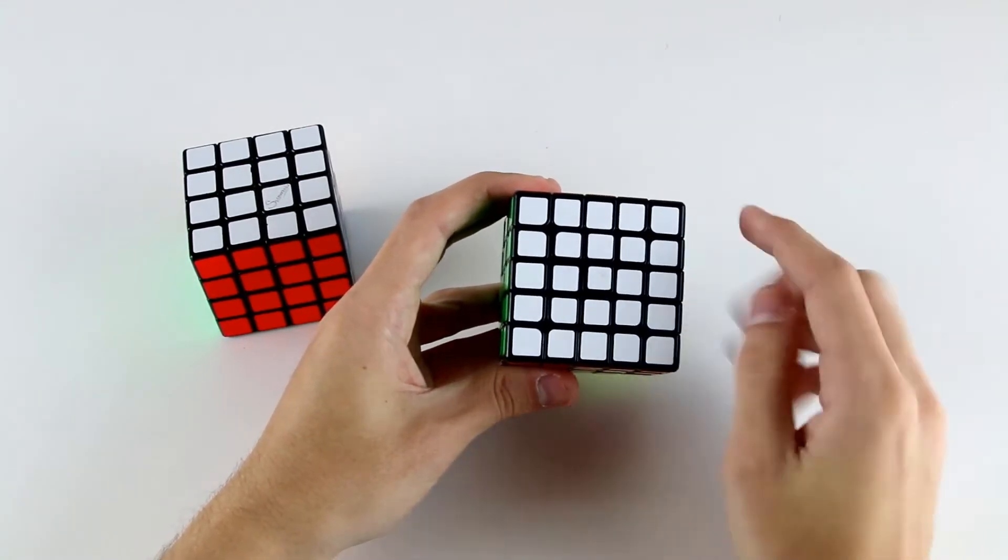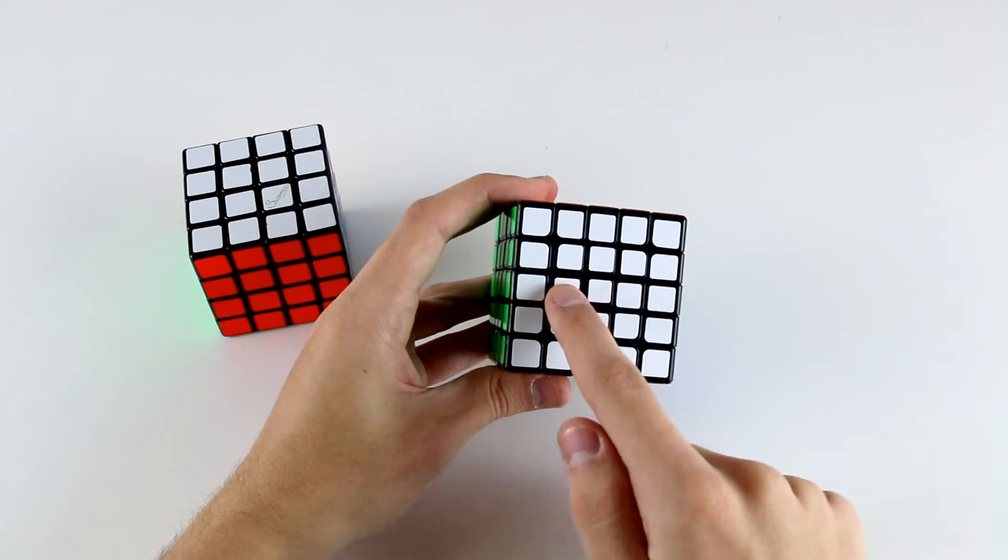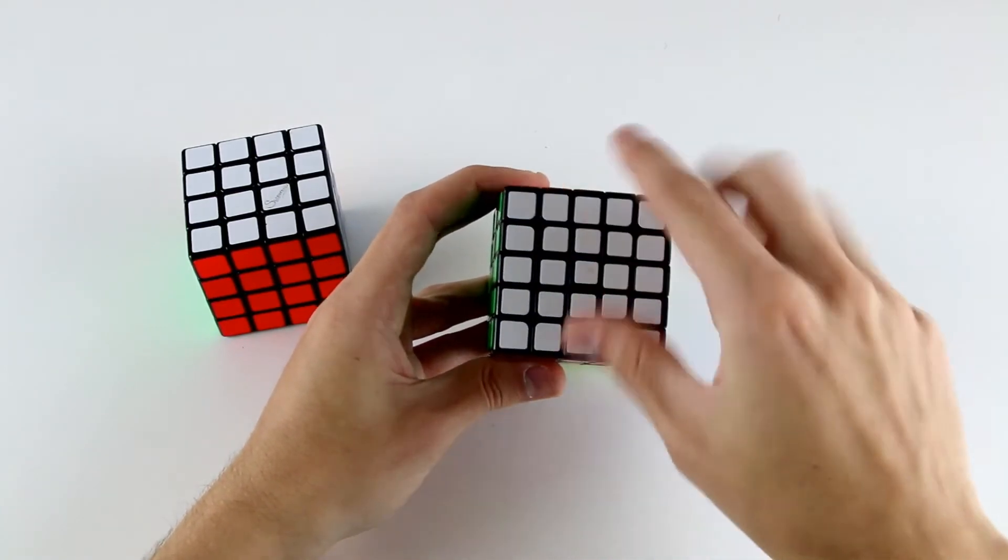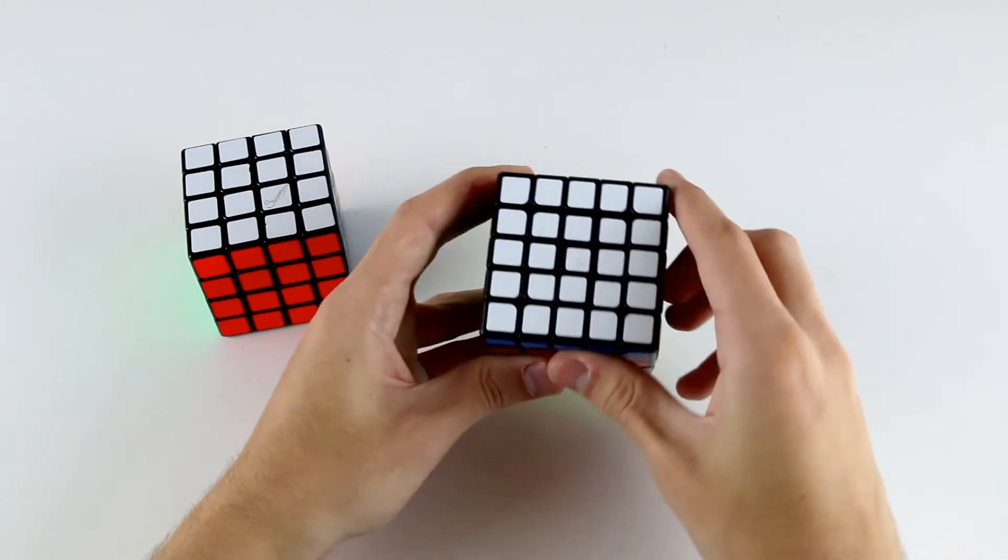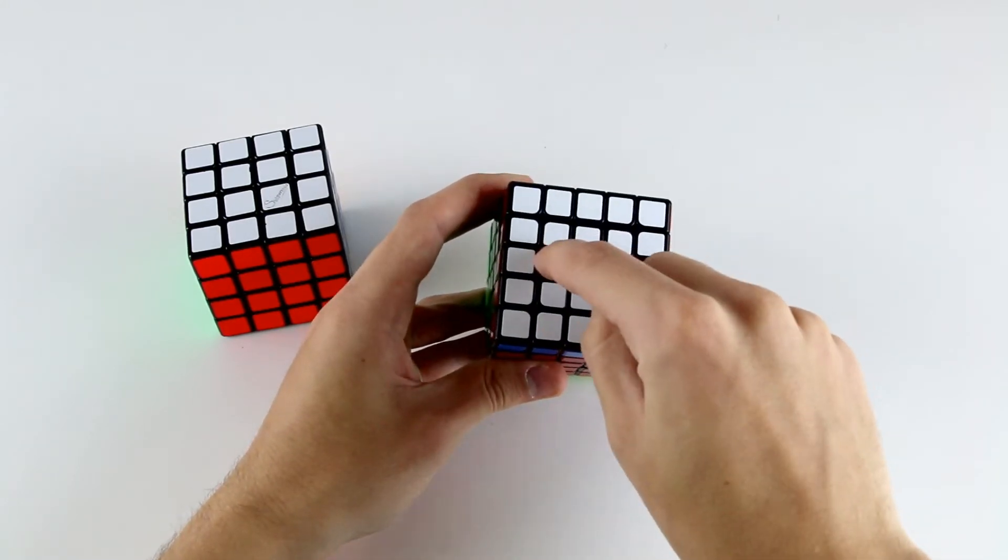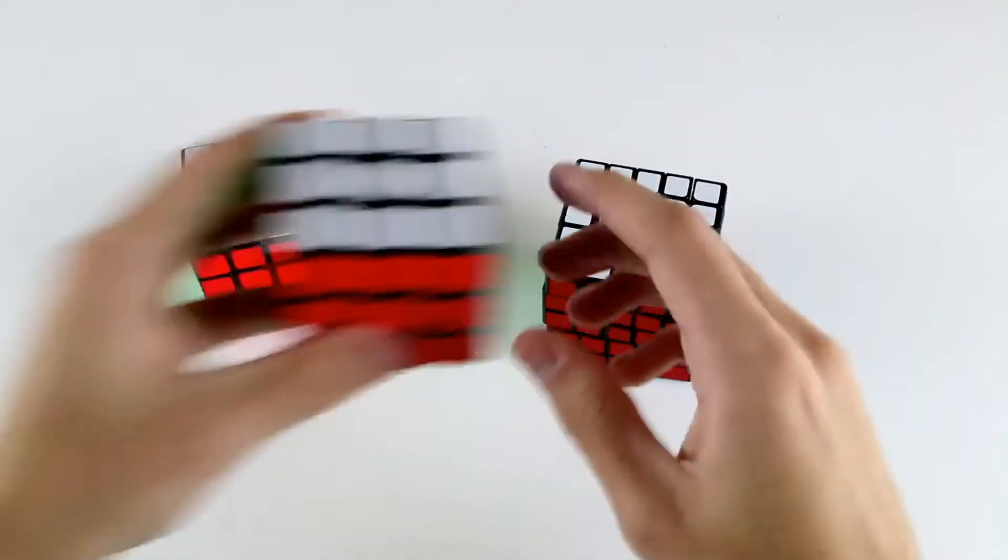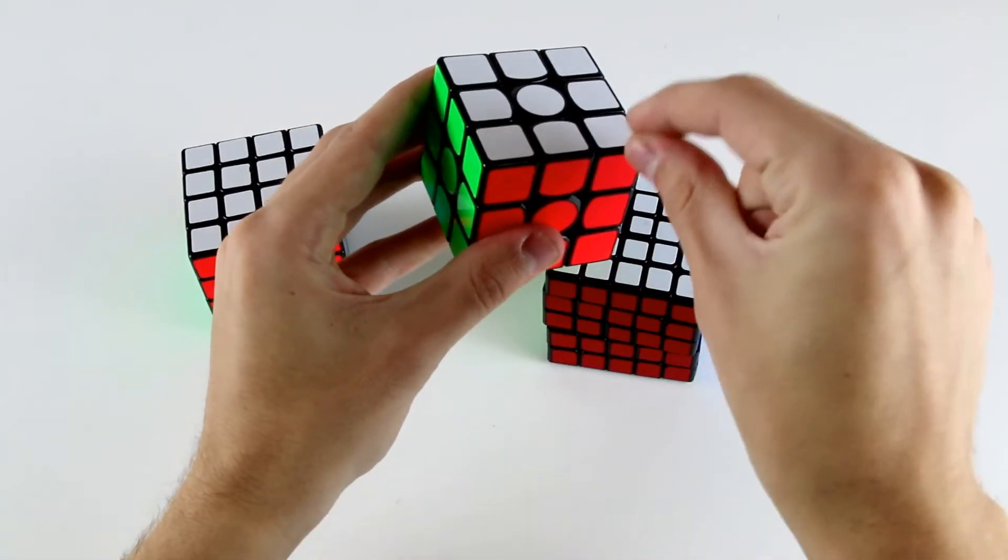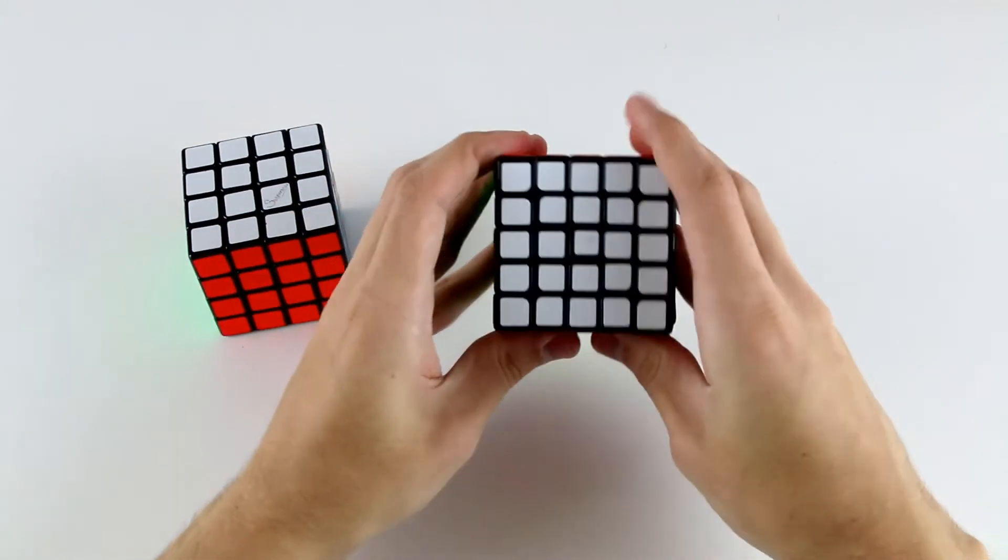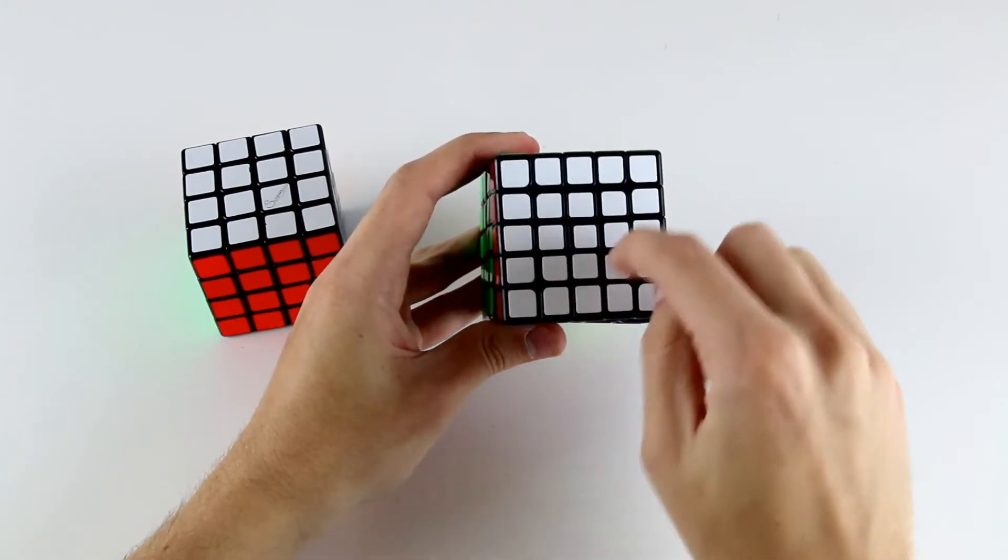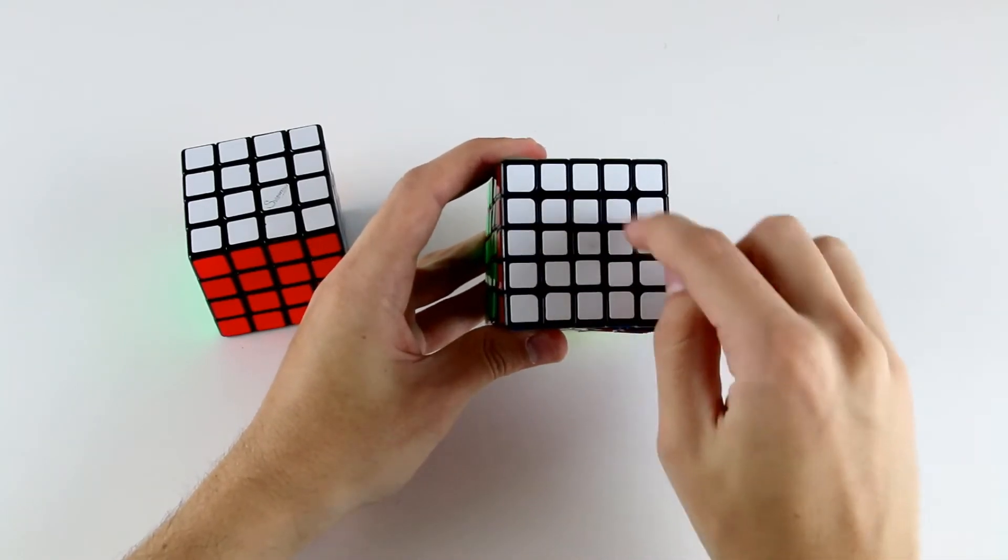You need to note that these edge centers can't go into the position of a corner center. If we try to move this edge center up here by doing a center move like that, it will only move from one edge position to another edge position. Just like how on a 3x3 edges can't be moved to the position of a corner, it's the same thing on these 5x5 centers. Doing a rotation like that just moves the corners around, and same with the edges.